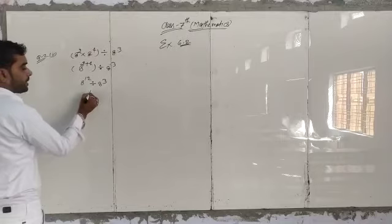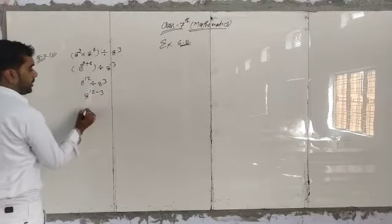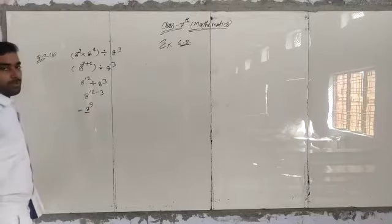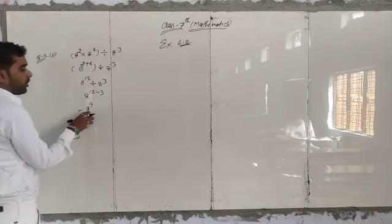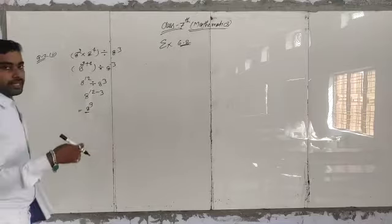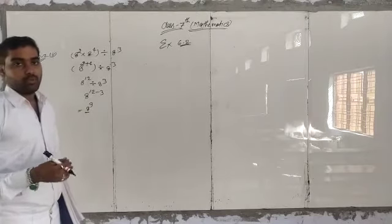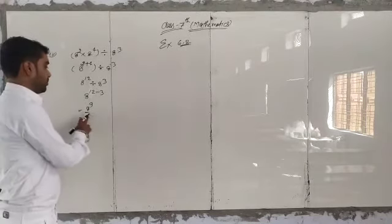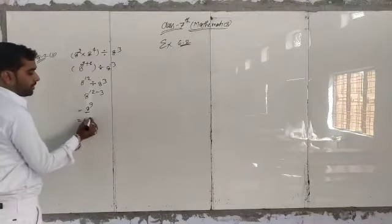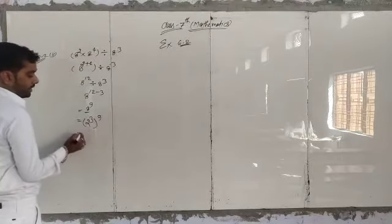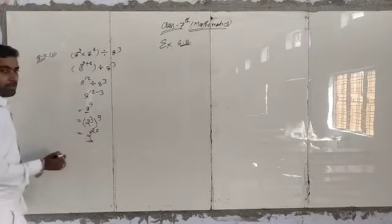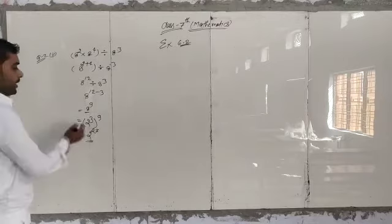When we divide with the same base, we subtract the powers: 12 minus 3. So 8k power 9 is our answer. This simplifies further: 2k power 27, giving us 2k power 7k power 9 as the correct result.